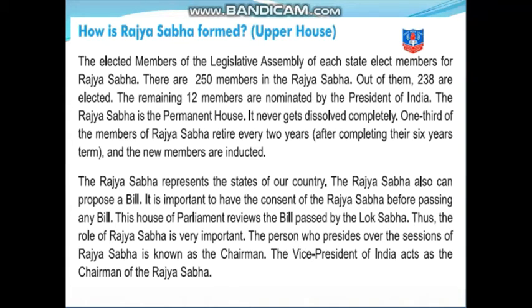The remaining 12 members are nominated by the President of India directly. The Rajya Sabha is the permanent house — it does not get dissolved completely. All Rajya Sabha elections are not conducted at once. One third of the members of the Rajya Sabha retire every two years after completing their six-year term, and new members are inducted. So Rajya Sabha does not change completely — one third of the members change every two years, specifically those who have completed their six-year term.